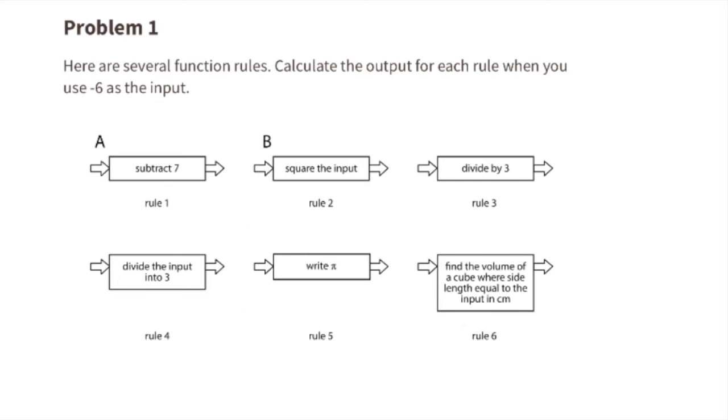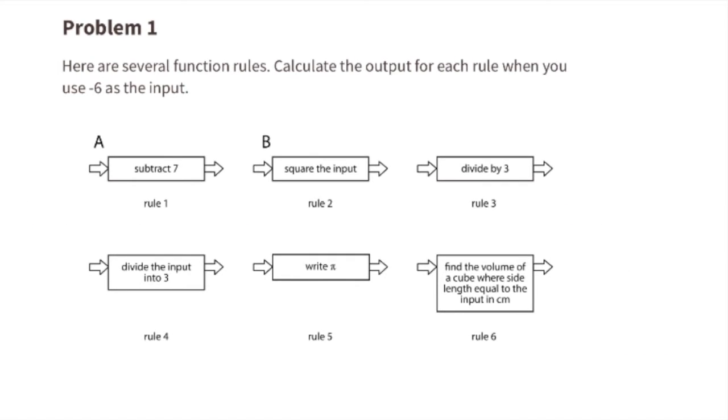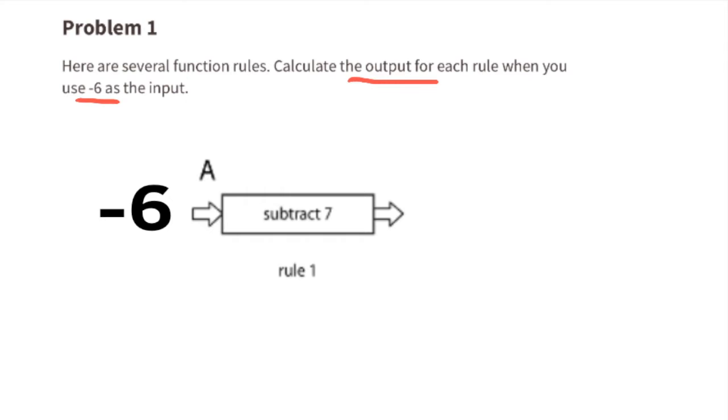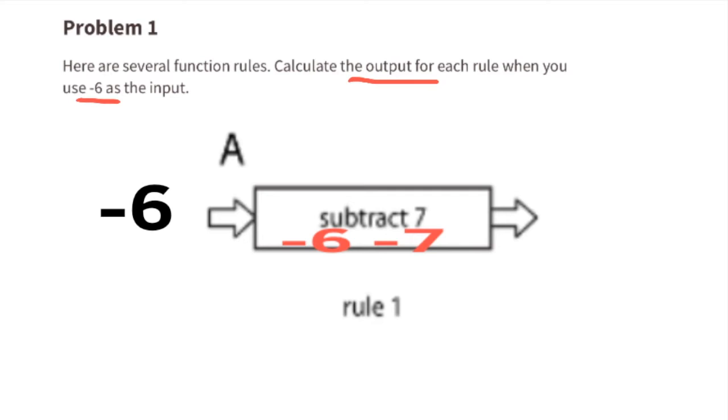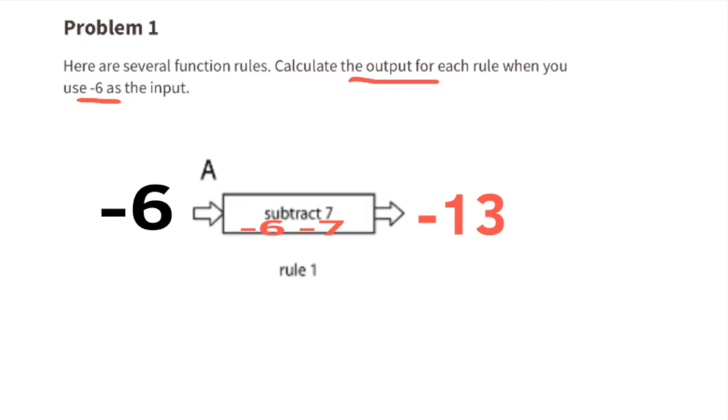Problem number 1. Here are several function rules. Calculate the output for each rule when you use negative 6 as the input. A. Negative 6 is the input. The function is subtract 7. Negative 6 minus 7. The output is negative 13.